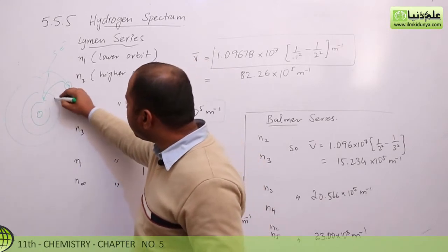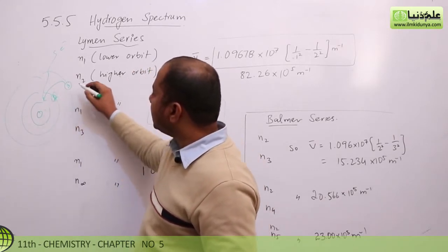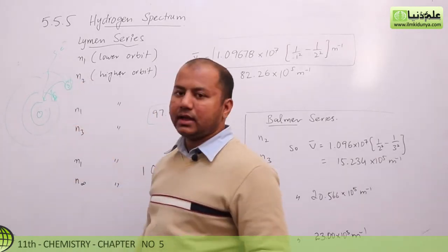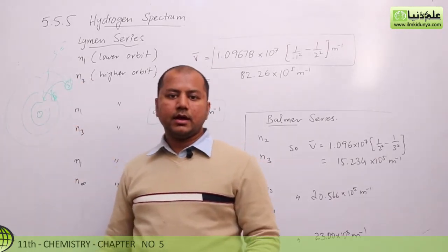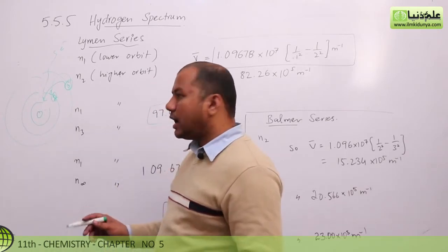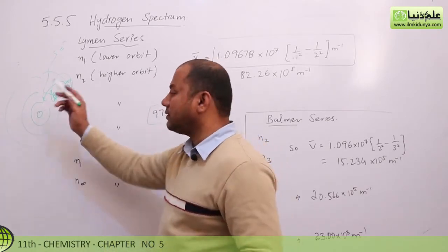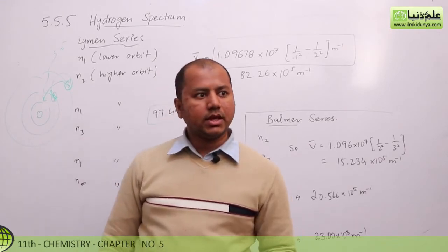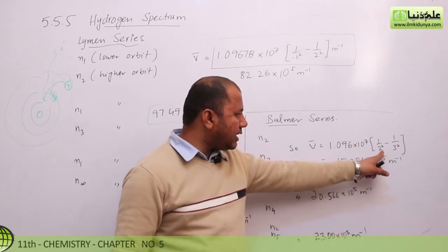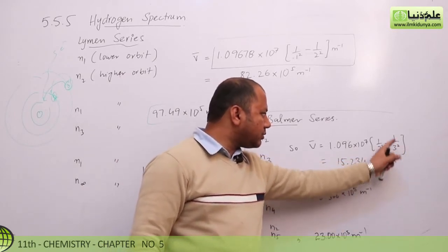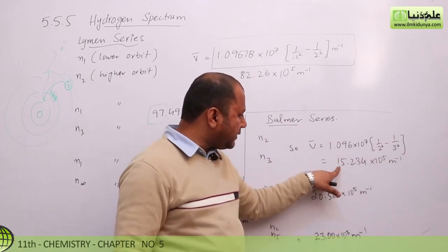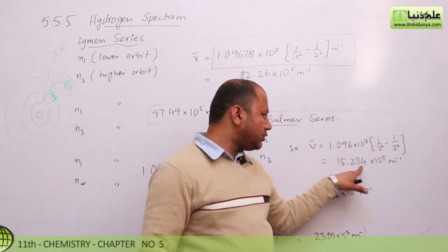He just put the electron in the second shell. You can say that if we jump from the other side — who is the electron — then the energy value comes in. But this is not the energy change. Now n2 here is 2 squared and 3 squared, and we just do this calculation and we will get 15.234.